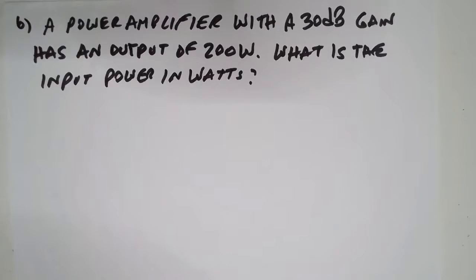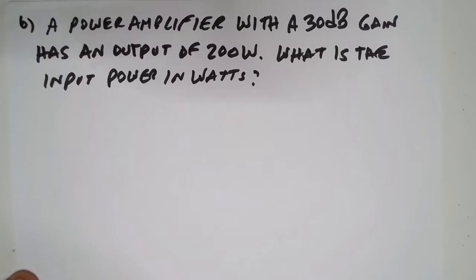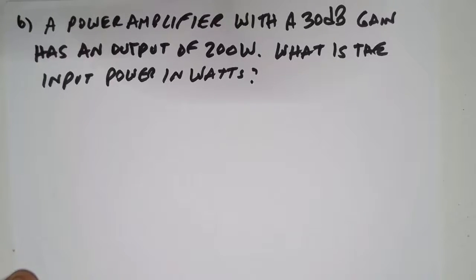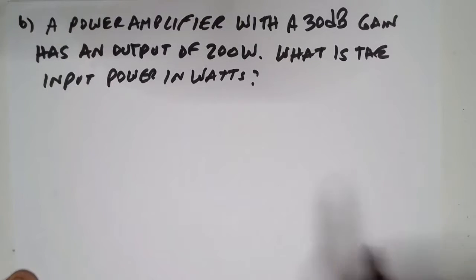Okay, we're going to continue with problem number six. A power amplifier with a 30 dB gain has an output of 200 watts. What is the input power in watts? Once again, we pull out our data.